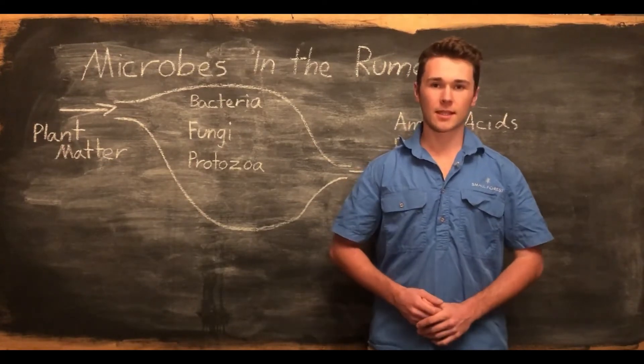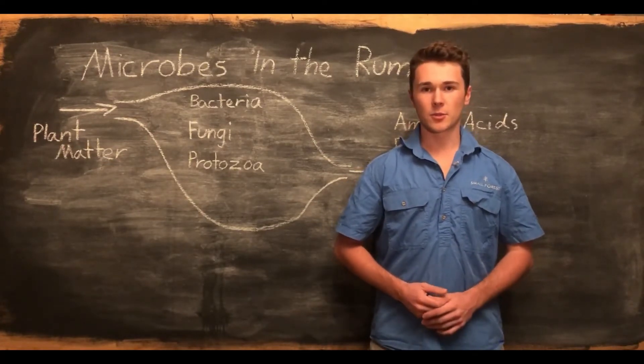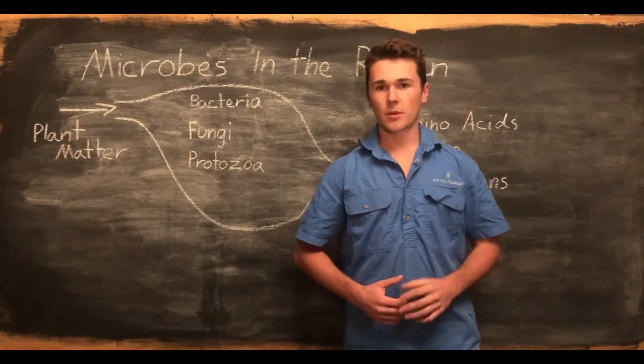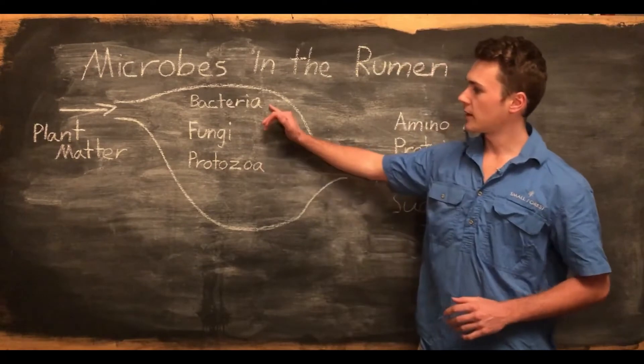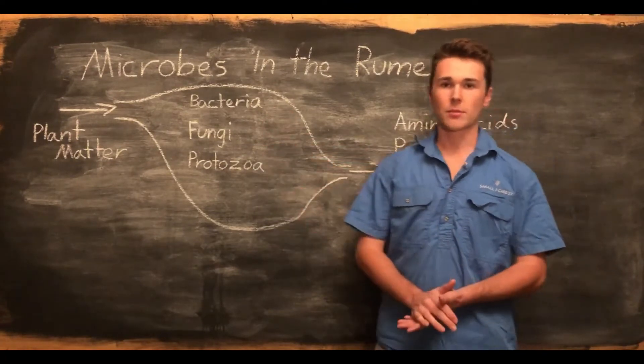As we discussed in the last video, microbes are fundamental to the functioning of the rumen. We have three different types of microbes in the rumen: bacteria, fungi, and protozoa.